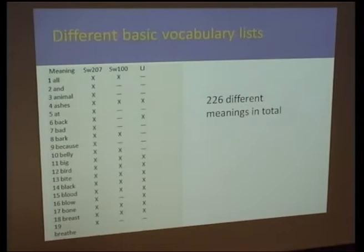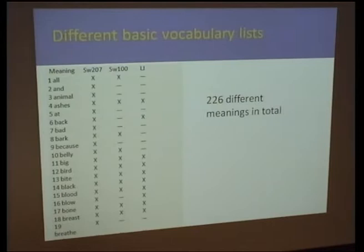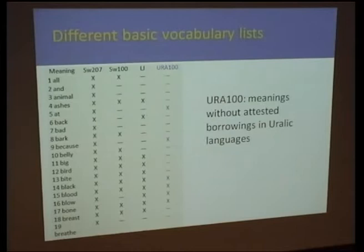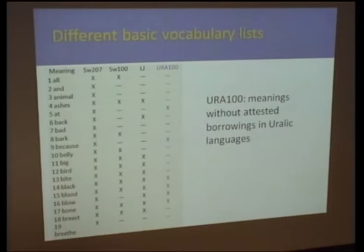We collected basic vocabulary lists — commonly known ones like the Swadesh list and the newer Leipzig-Jakarta list. Since these lists overlap quite a lot, we checked how many different meanings there are in total: 226. But because of discussion about the effect of borrowings and whether these lists apply equally well to each language group, we created a core vocabulary list specific to Uralic languages. From the 226 meanings we removed those with attested borrowings, ending up with a list of 100 items called the Euro 100 list.